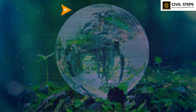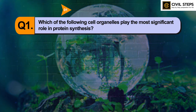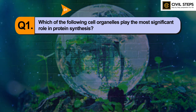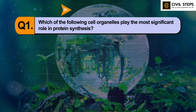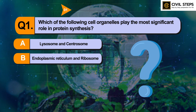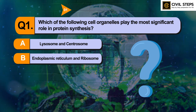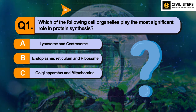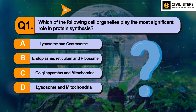The first question is: which of the following cell organelles play the most significant role in protein synthesis? Option A: Lysosome and Centrosome. Option B: Endoplasmic Reticulum and Ribosome. Option C: Golgi Apparatus and Mitochondria. Option D: Lysosome and Mitochondria.